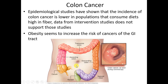Colon cancer is still one of the most deadly cancers. Although still most common in older individuals, we are seeing more cases in younger and middle-aged adults — possibly a result of changes in diet and lifestyle. A high-fiber diet decreases transit time, meaning things move through more quickly, which lessens the contact time for carcinogens on the bowel wall. A high-fiber diet lowers your risk.